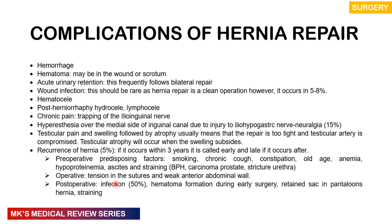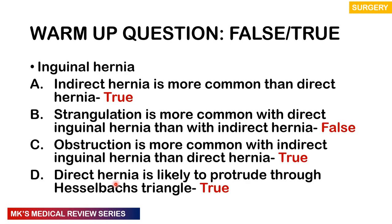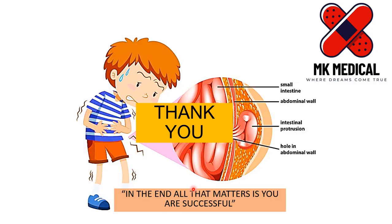Coming back to our warm-up question: A) indirect hernia is more common than direct hernia — TRUE. B) strangulation is more common with direct inguinal hernia than indirect — FALSE, it's the opposite. C) obstruction is more common with indirect hernia than direct hernia — TRUE. D) direct hernia is likely to protrude through Hesselbach's triangle — TRUE. I really hope you learned a lot. If you did enjoy, please subscribe to the channel, drop a like, drop a comment, and stay tuned for more topics. My name is Dr. Moses Kazewu — to Zambia and beyond, until next time!